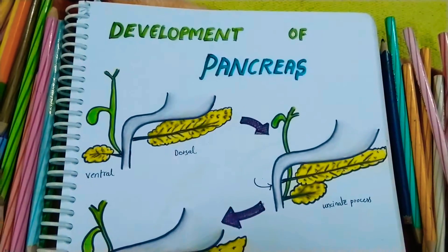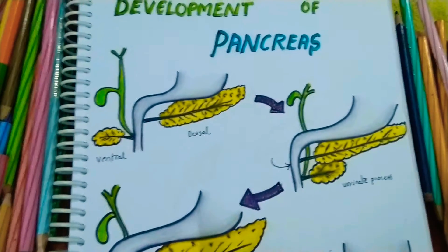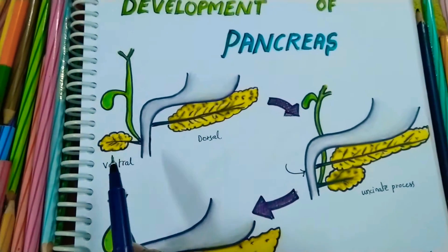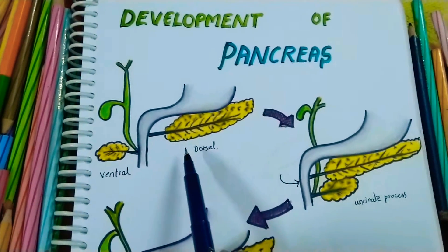Development of pancreas. If you're new to my channel, please subscribe. The pancreas develops from two buds: a ventral bud and a dorsal bud.